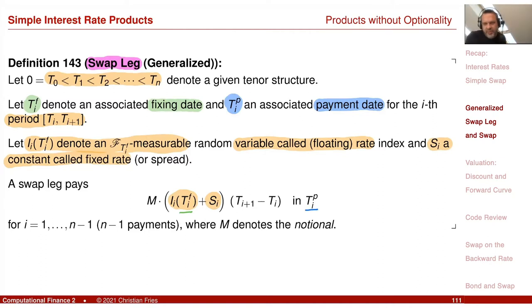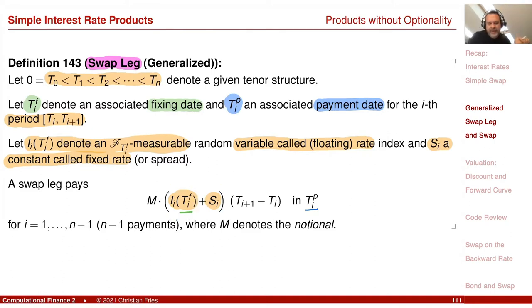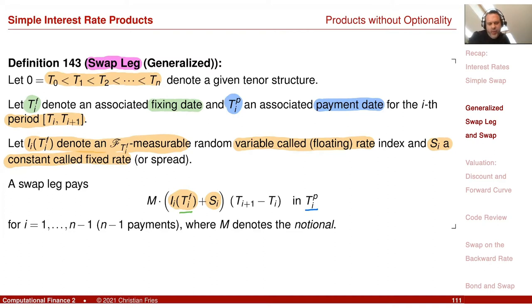My swap is just the difference of two such swap legs. You can build our previous definition of a swap from this by, for example, choosing one leg just to pay the index with spread zero, and the other leg just paying a constant with index zero. So it's enough to value this, and the swap is just the difference of the two.